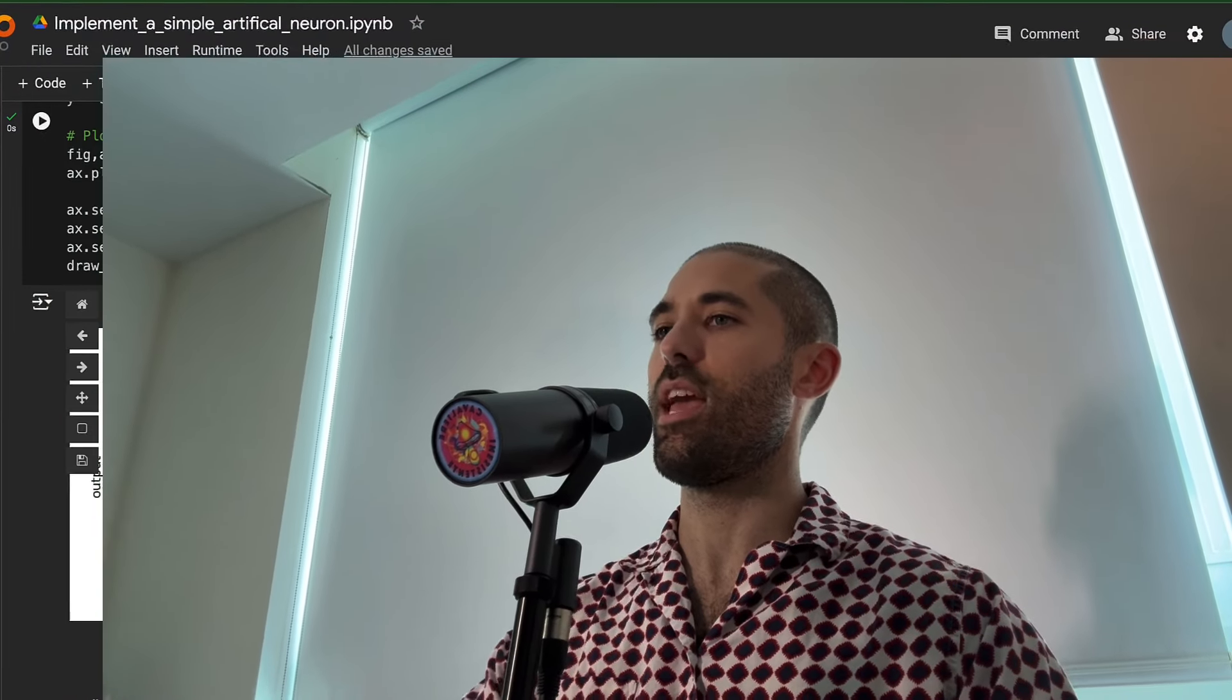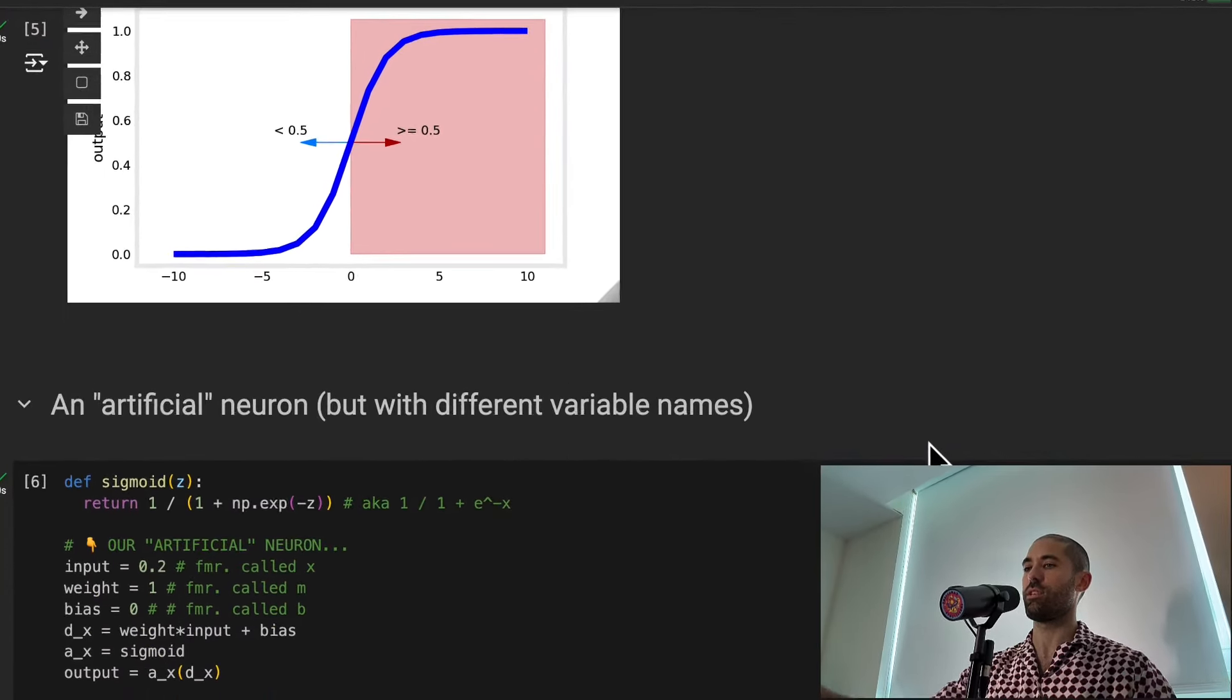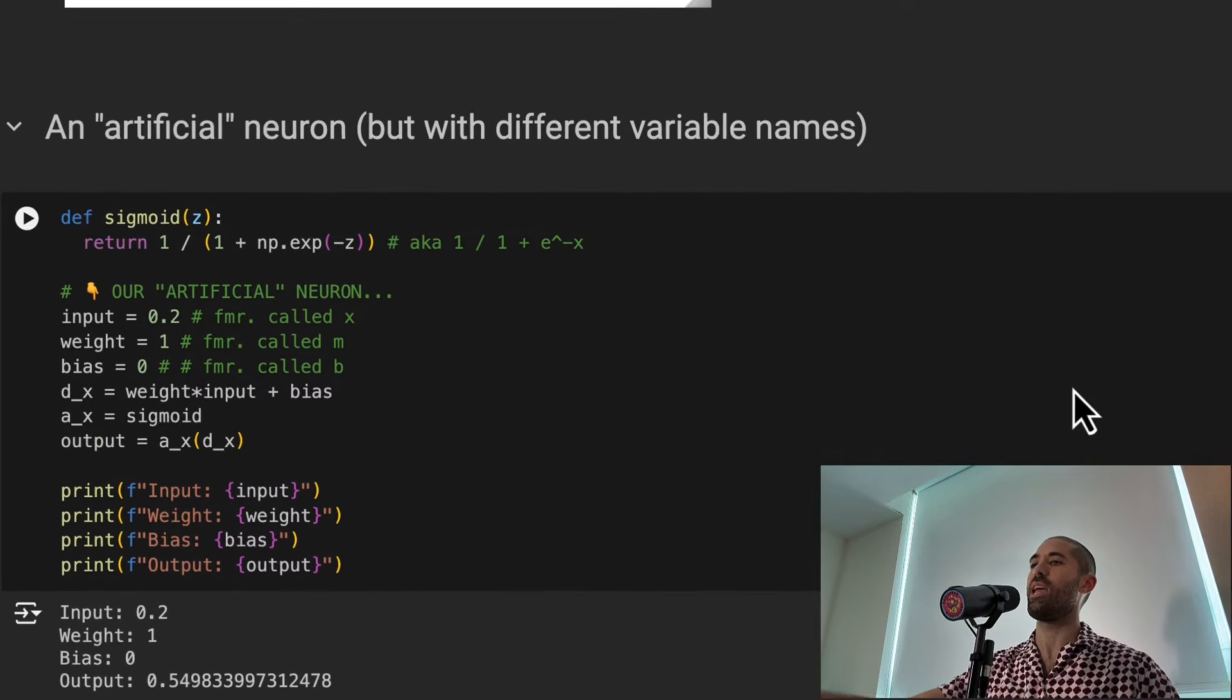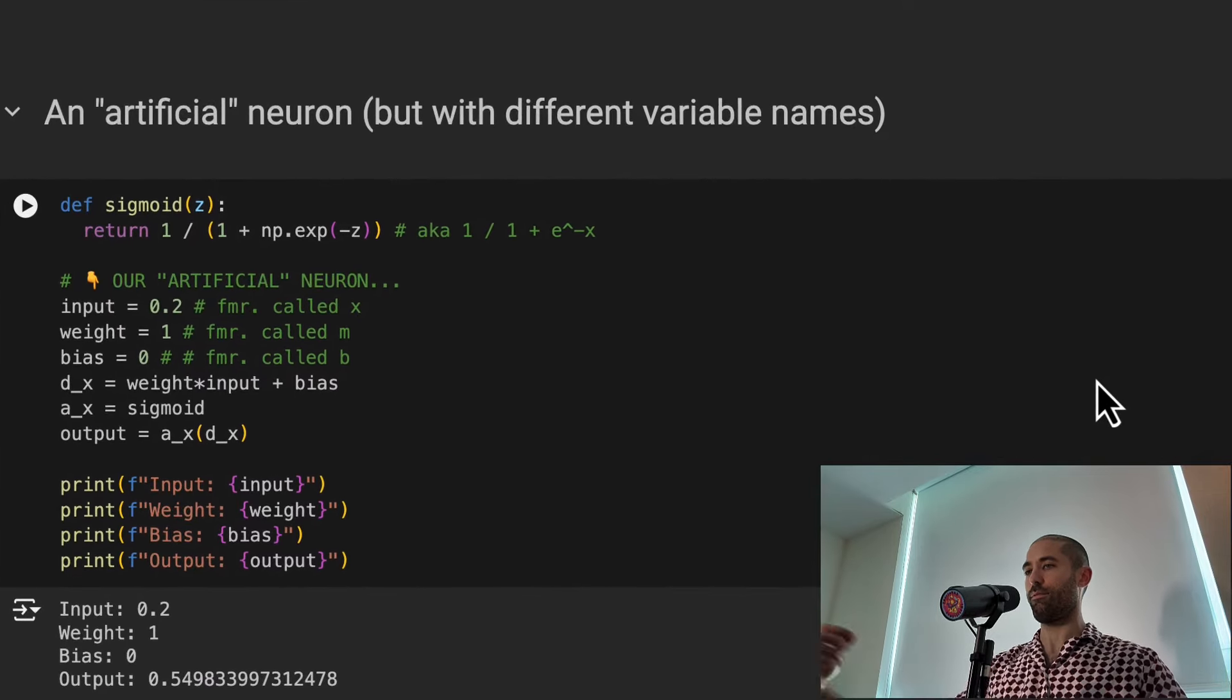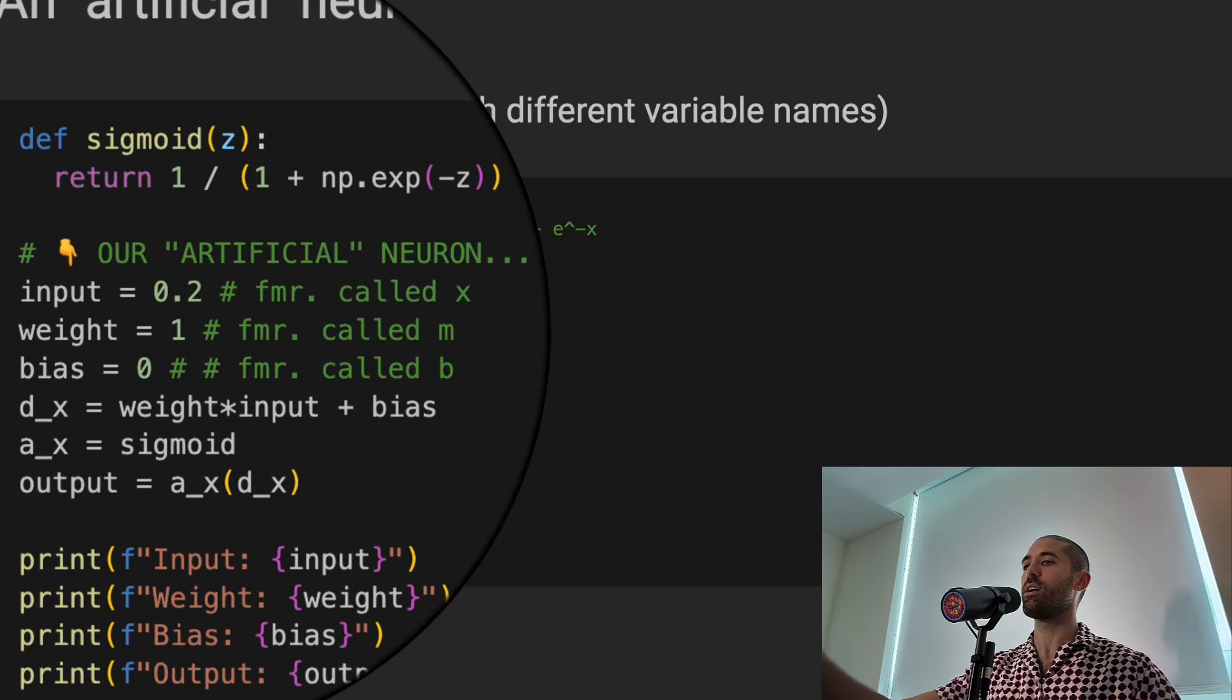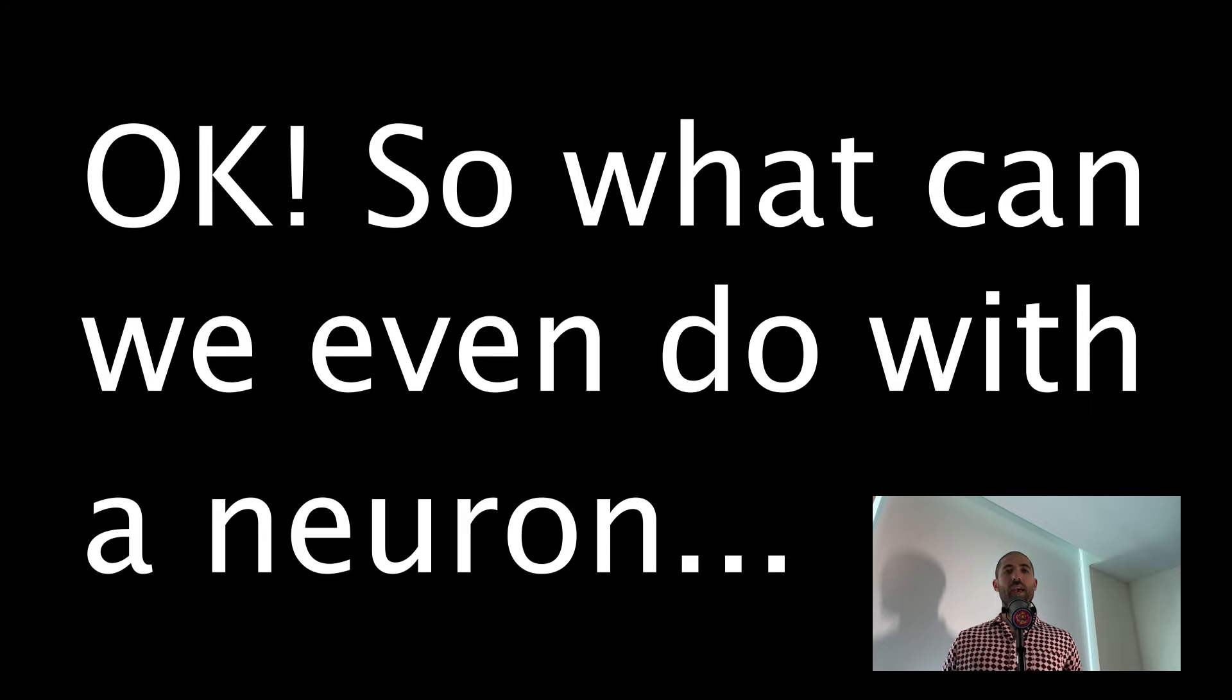Now let's change some of the names of these variables or symbols in our code. Changing the name of something doesn't change the underlying thing. It's like a name or a nickname. Both someone's name and their nickname are valid ways of referring to them. We're going to rename X to be called input, we're going to rename M to be called weight, we're going to rename B to be called bias, and we're going to rename Y to be called output.